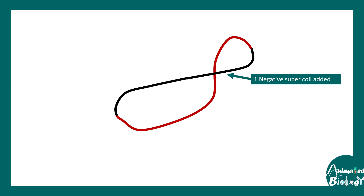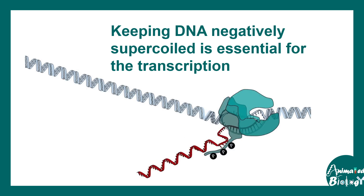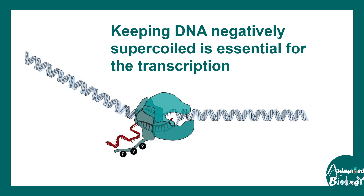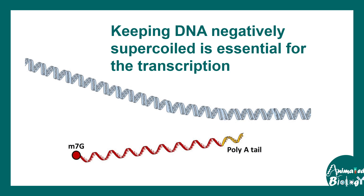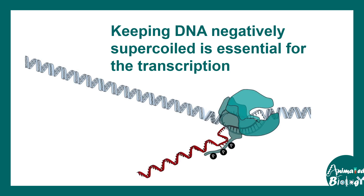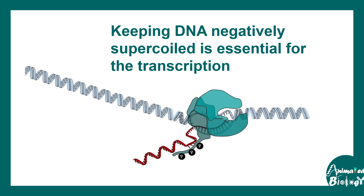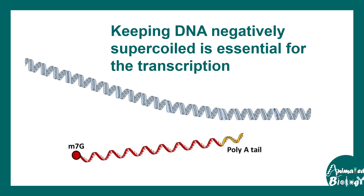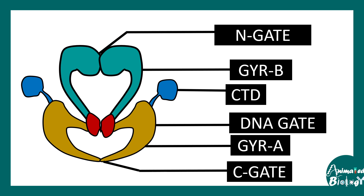This is how DNA gyrase introduces a negative supercoil in the DNA. The job of DNA gyrase is to introduce negative supercoils, and this underwound DNA is really important — negatively supercoiled DNA is essential for transcription or replication processes.